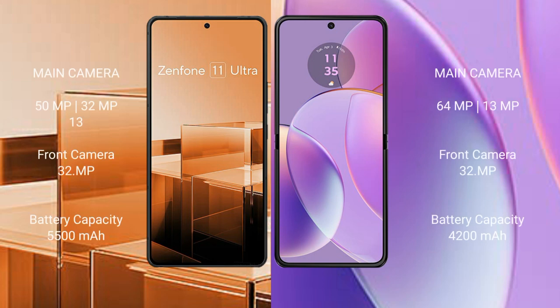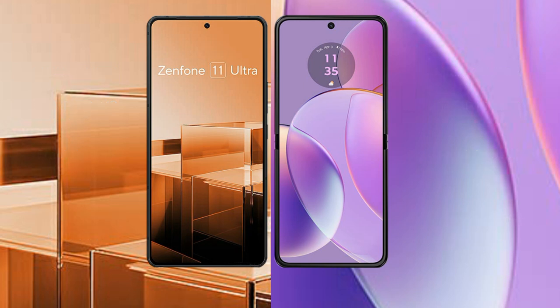Asus Zenfone 11 Ultra features a triple rear camera setup: 50MP, 13MP, and 13MP, with a 32MP front camera. Motorola Razr 40 features a dual rear camera setup: 64MP and 13MP, with a 32MP front camera. Asus Zenfone 11 Ultra has a 4400mAh battery with 65W fast charging, while Motorola Razr 40 has a 4200mAh battery with 30W fast charging.